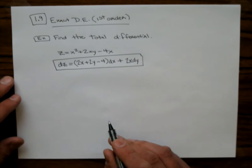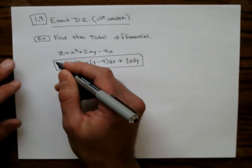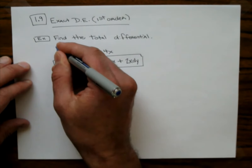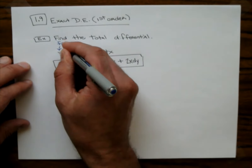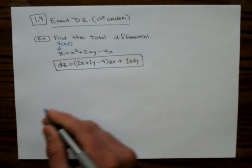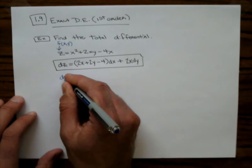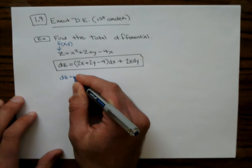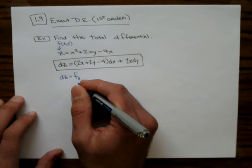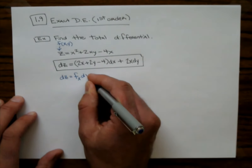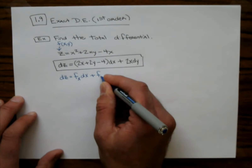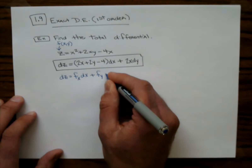The total differential — if you want to call this function F of X, Y — then the total differential formula is: the partial of F with respect to X times DX, plus the partial of F with respect to Y times DY.